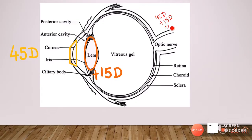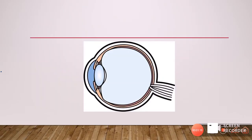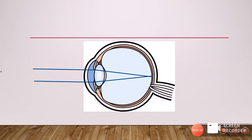So it comes to about plus 60 diopters of power. Since the power of the eyeball is positive, it means the eyeball acts as a converging lens. Rays of light coming from far are usually parallel, and when such parallel rays pass through the cornea and crystalline lens — the major refracting surfaces — they converge and focus on the retina.